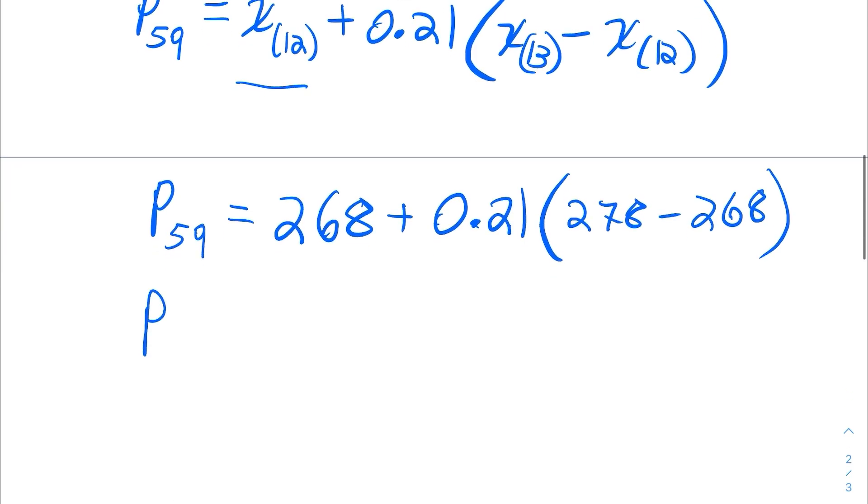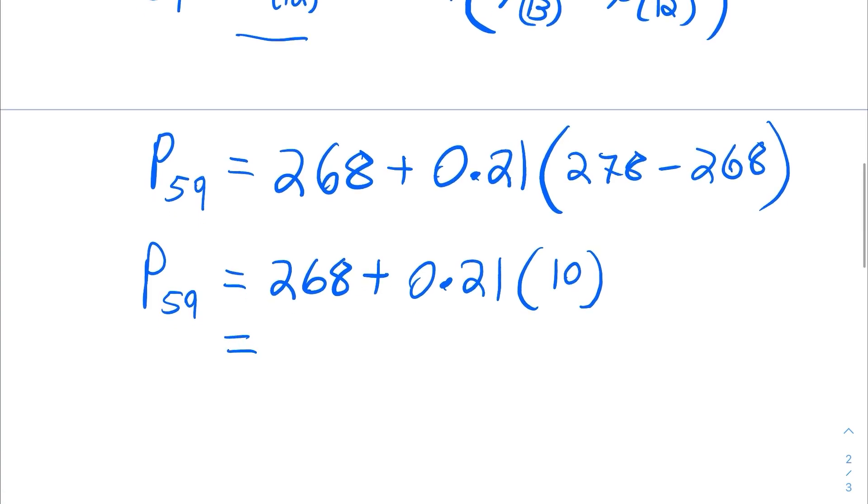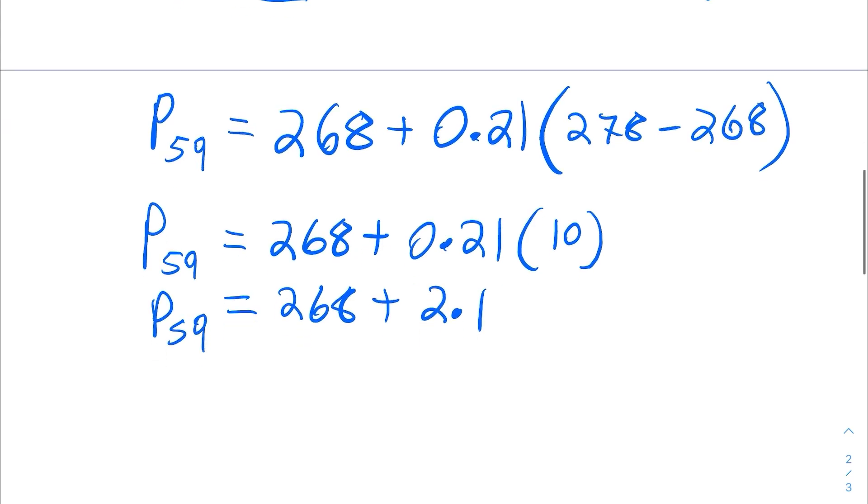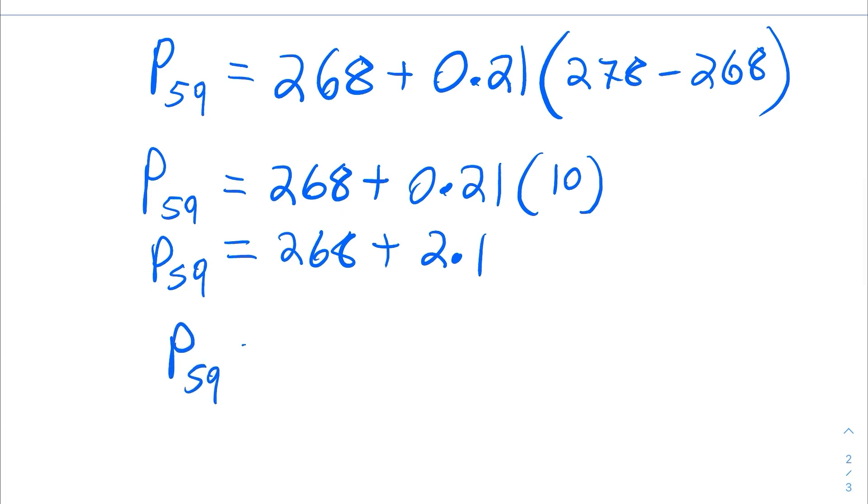And that's minus X12, which was 268. And then, I'm just going to find P59 by doing this calculation on the right. So, the 59th percentile is equal to 268 plus 0.21 times, that's equal to 10. And then, 0.21 times 10, that's 2.1, so that I get that the 59th percentile calculated by hand using linear interpolation is 270.1.